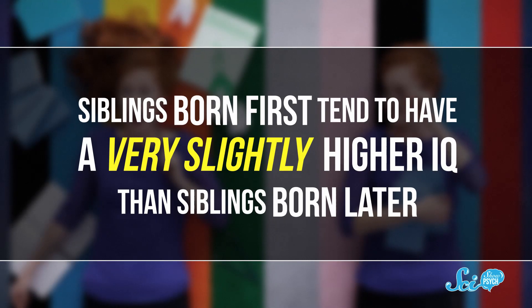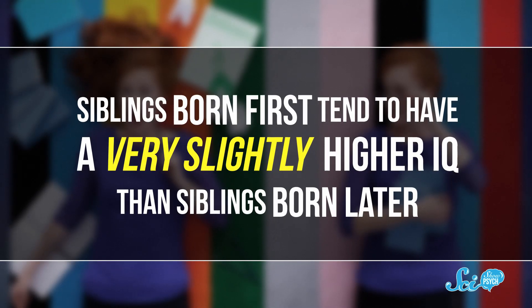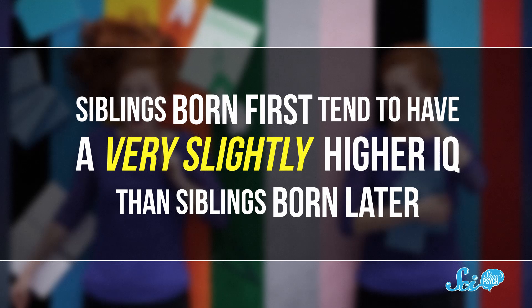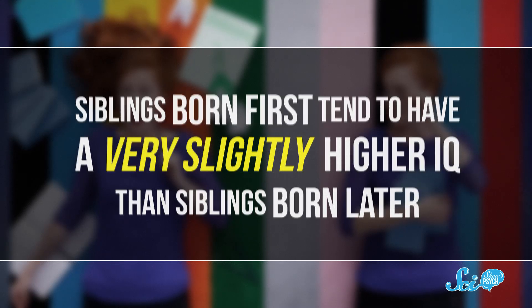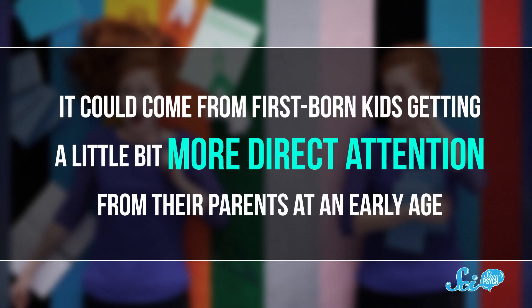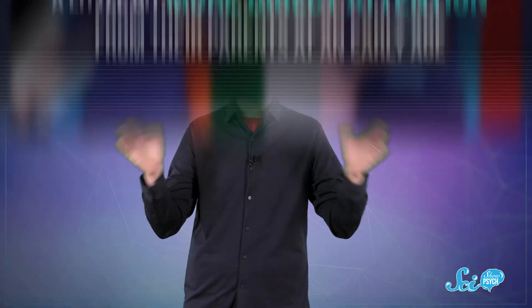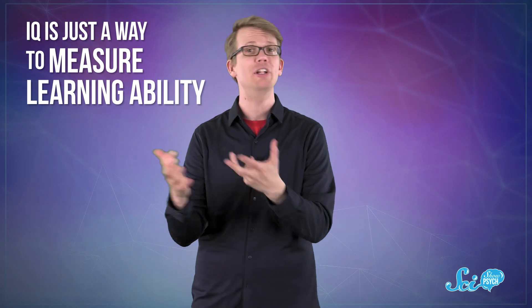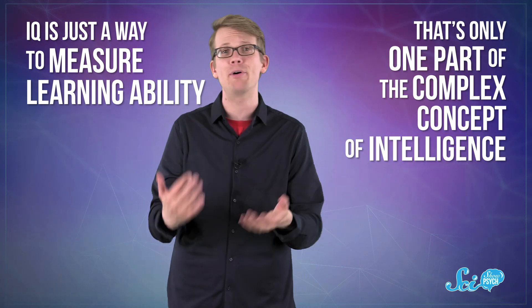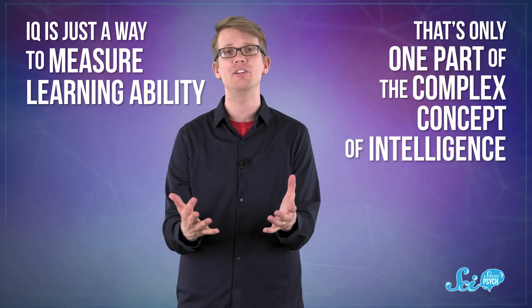Siblings born first tend to have a very slightly higher IQ than siblings born later. We're talking, like, a couple of points. It could come from first-born kids getting a little bit more direct attention from their parents at an early age. But as we've talked about before here on SciShow Psych, IQ is just a way to measure learning ability. And that's only one part of the complex concept of intelligence.